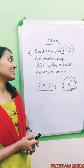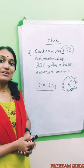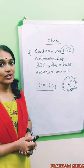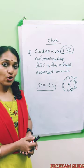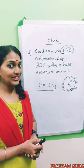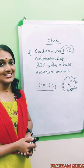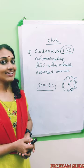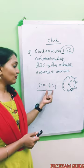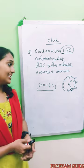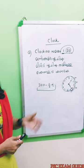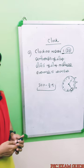What is the type of questions in the clock? This is a simple formula: 30H minus 11 by 2M.